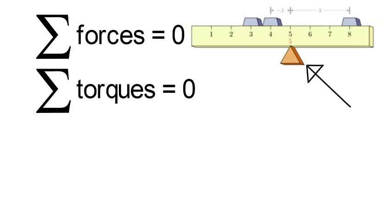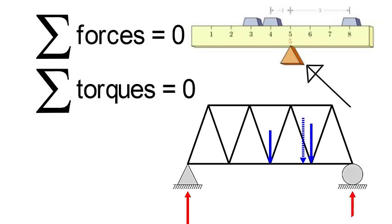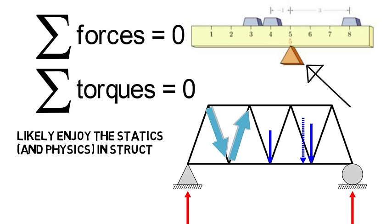So if you're looking at the forces within a bridge or truss, the same principles apply, but now there's just more to it. The weight is straight down as shown in blue, all the beams exert forces on one another, but the sum of them is equal to zero, and the torques sum to zero as well because the bridge is not moving. It's of course even more complicated than this, but if you enjoy that kind of basic physics, then you'll likely enjoy the statics and physics you see in structural engineering.